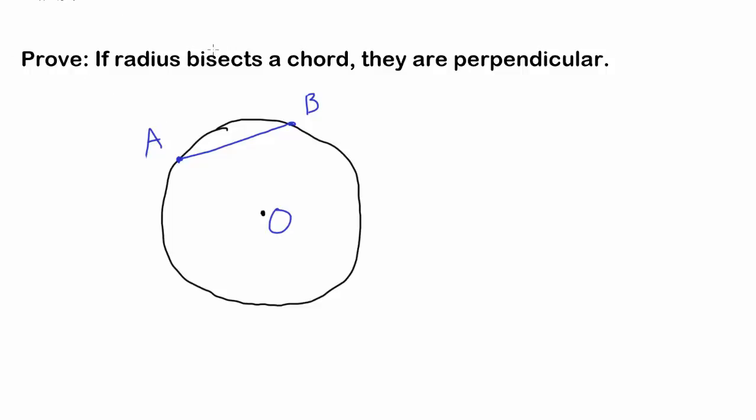We have a radius drawn to the chord that's bisecting it, dividing it into two equal pieces, and we want to show that they are perpendicular.